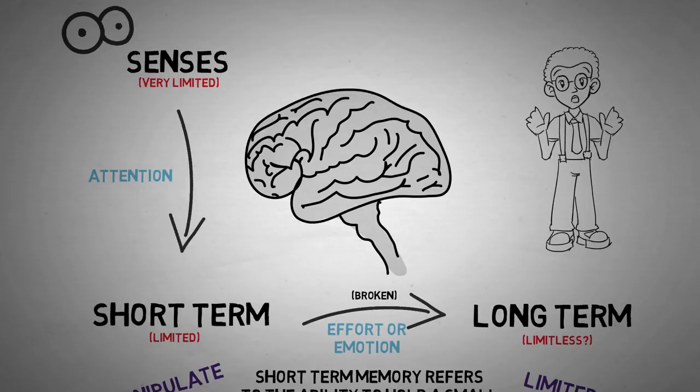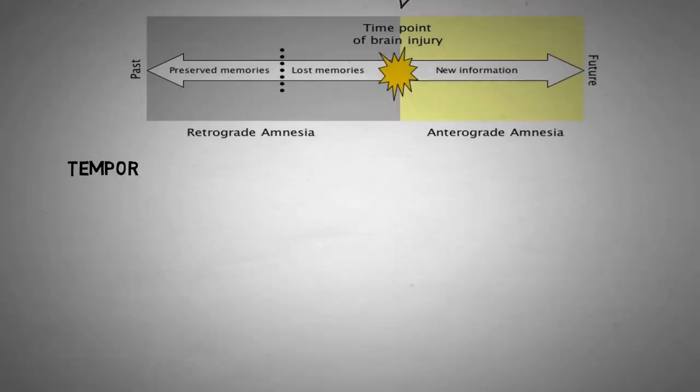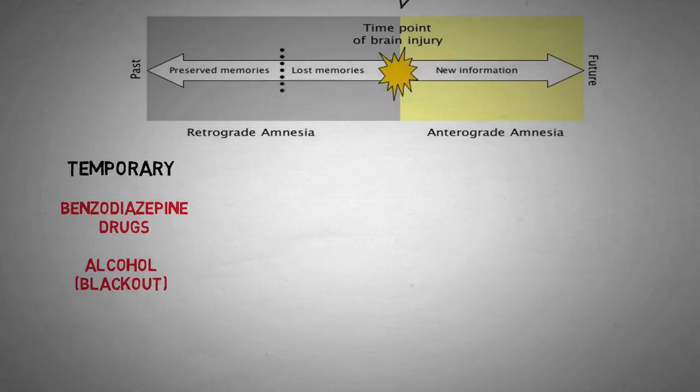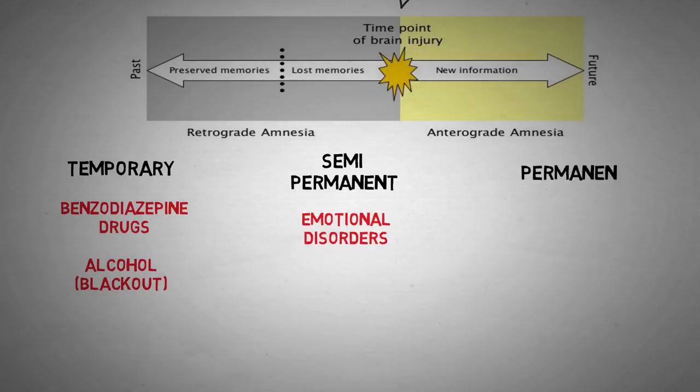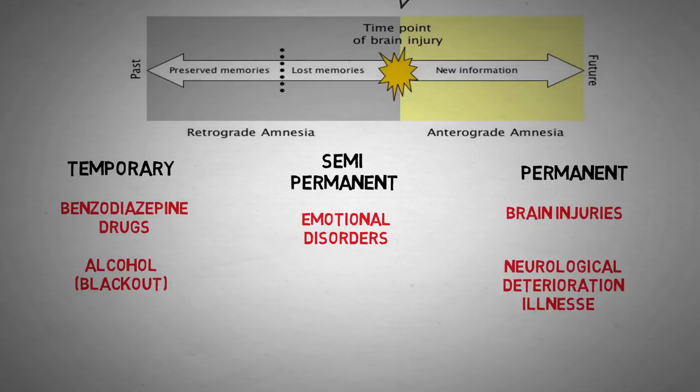So how do you actually develop this? Well, there are a few ways. Two temporary forms of anterograde amnesia are caused by benzodiazepine drugs, or too much alcohol, also known as a blackout. A semi-permanent form of anterograde amnesia is caused by certain emotional disorders, while permanent anterograde amnesia can be caused by traumatic brain injuries or certain illnesses that cause neurological deterioration.